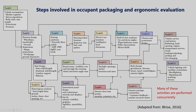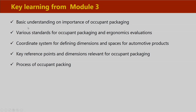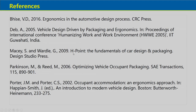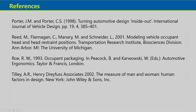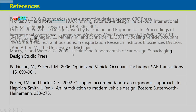The key learnings from Module 3 are: basic understanding of the importance of occupant packaging; various SAE, British, and ISO standards related to occupant packaging and ergonomic evaluation; the coordinate system for defining dimensions and spaces in automotive products; key reference points and dimensions relevant to occupant packaging; and the process of occupant packaging with schematic diagrams. Various references were used for this module, and students are encouraged to explore the listed online resources for more information and updates. Thank you.